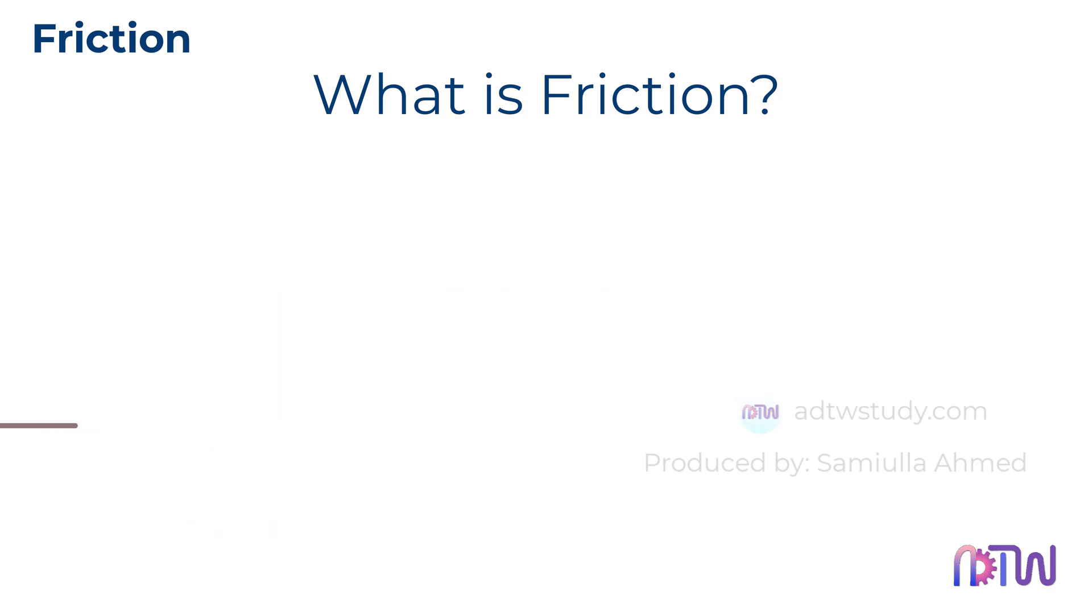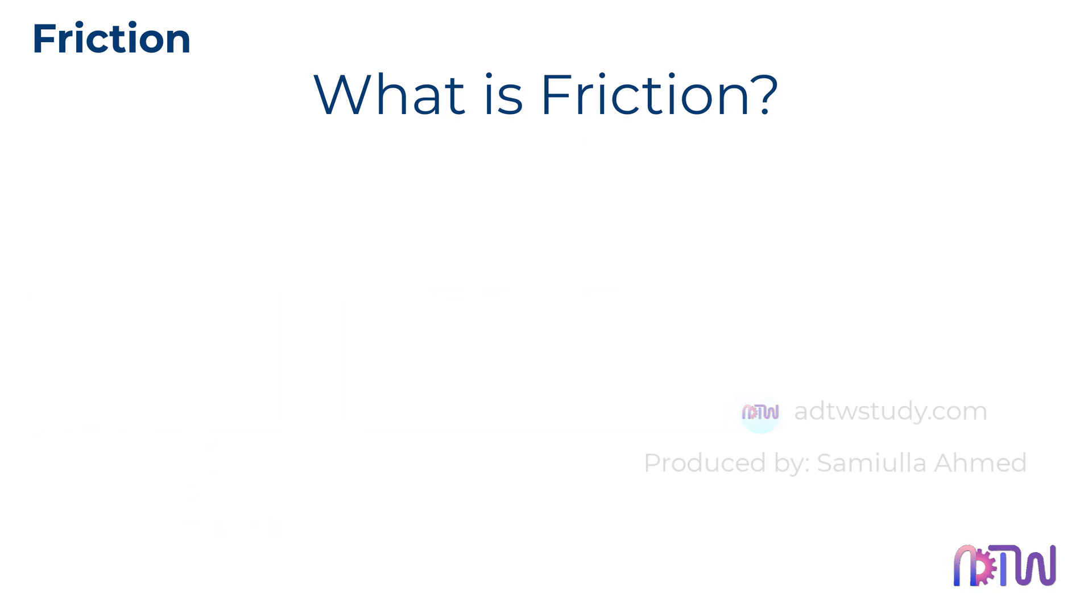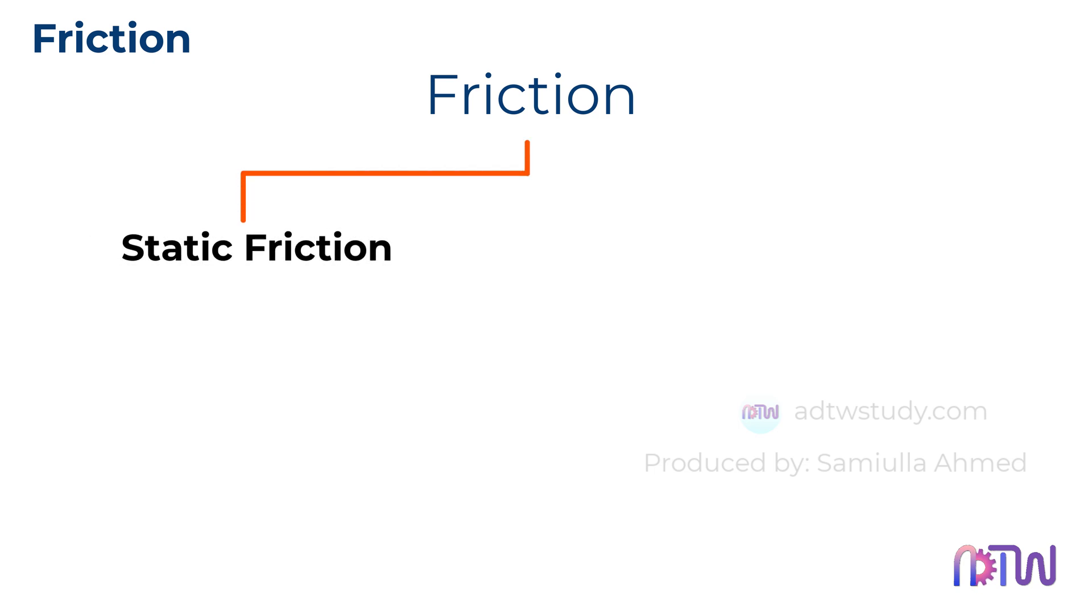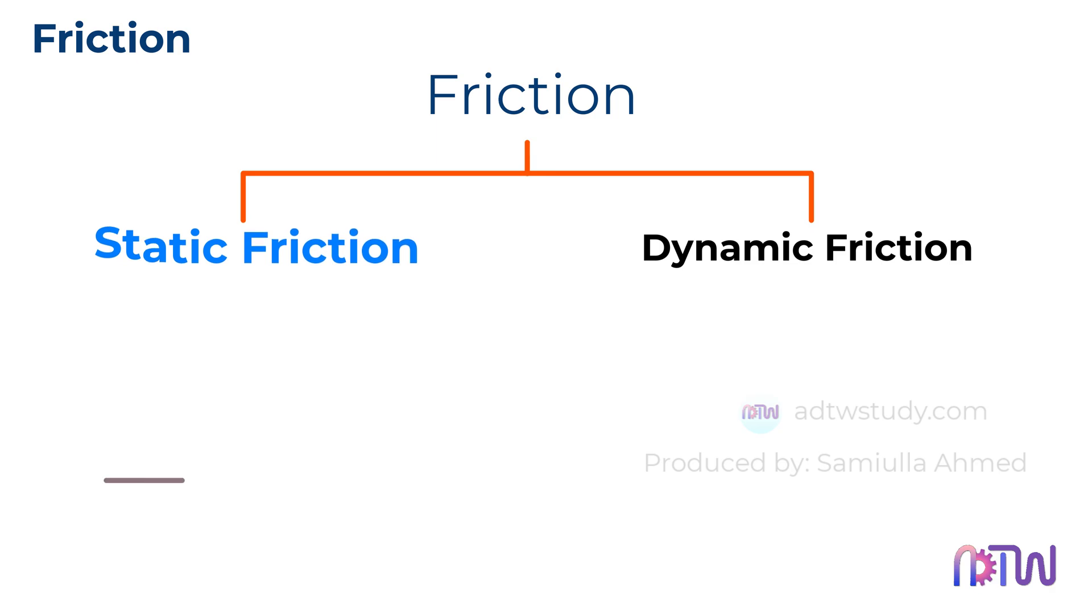Let's see the types of friction. Typically, friction is broadly classified into two categories: static friction and dynamic friction. Static friction is the frictional force that prevents the box from moving when we apply a small force. It needs to be overcome to start the motion.